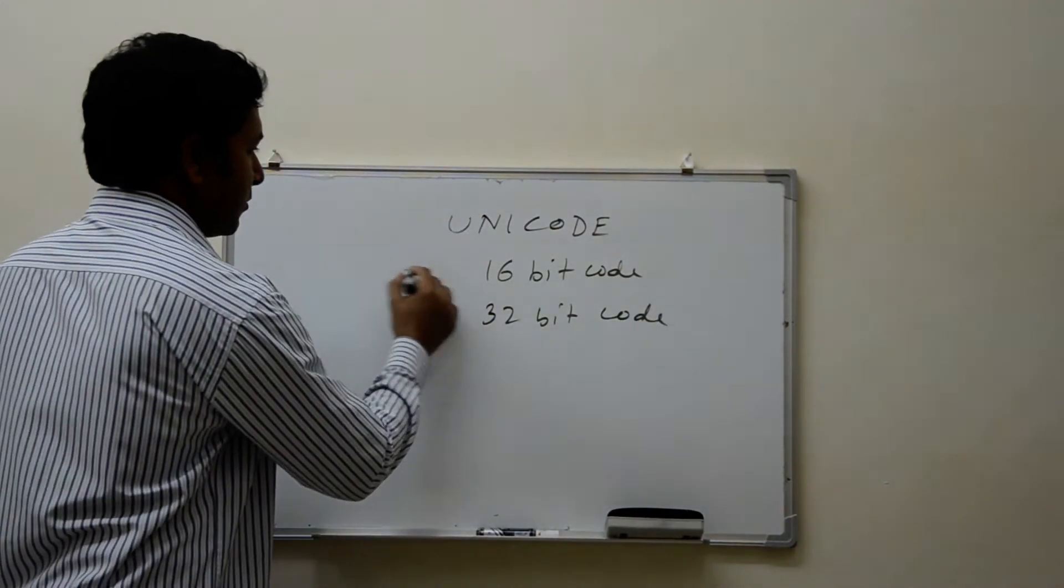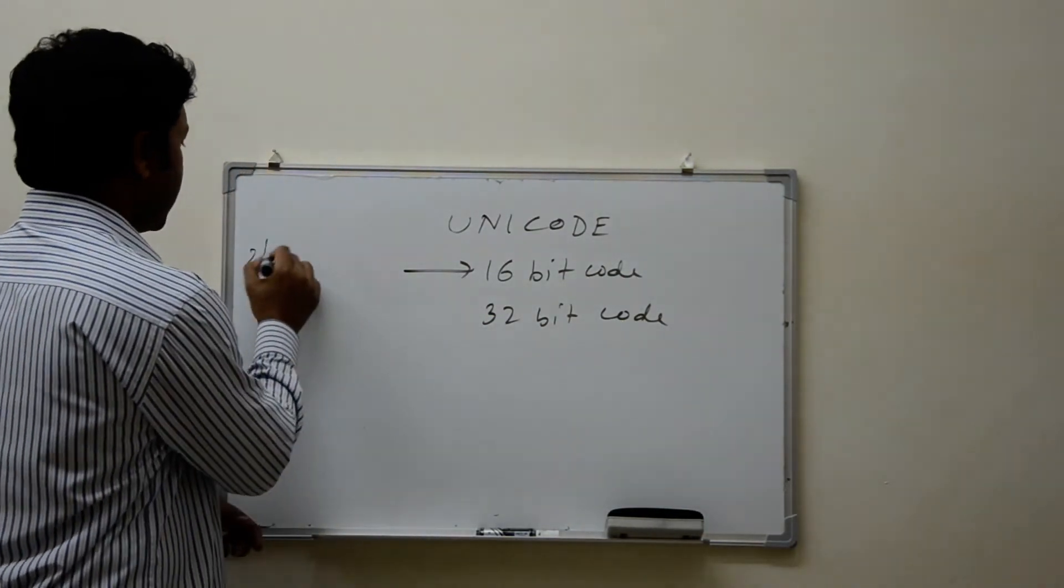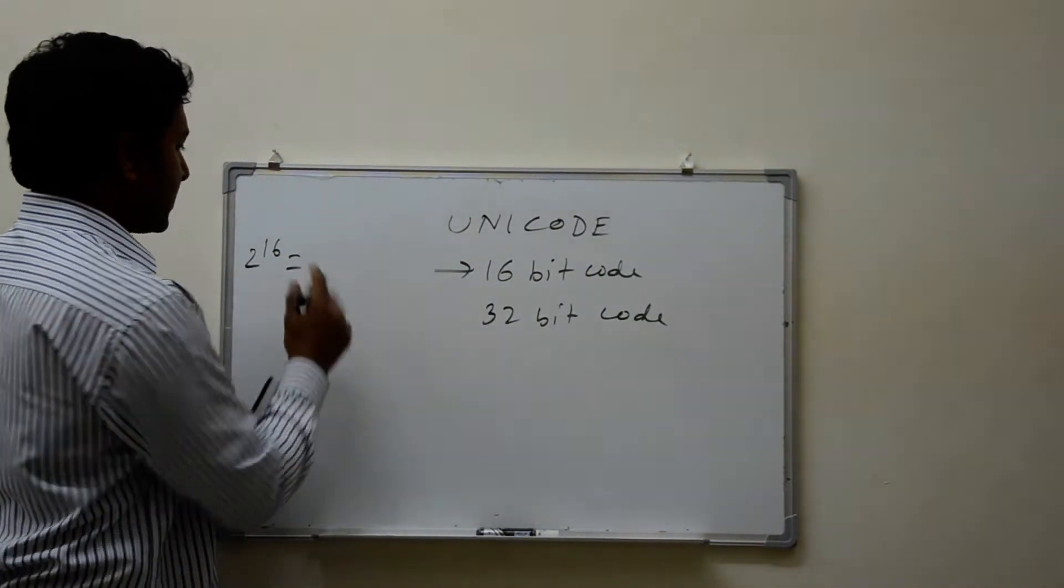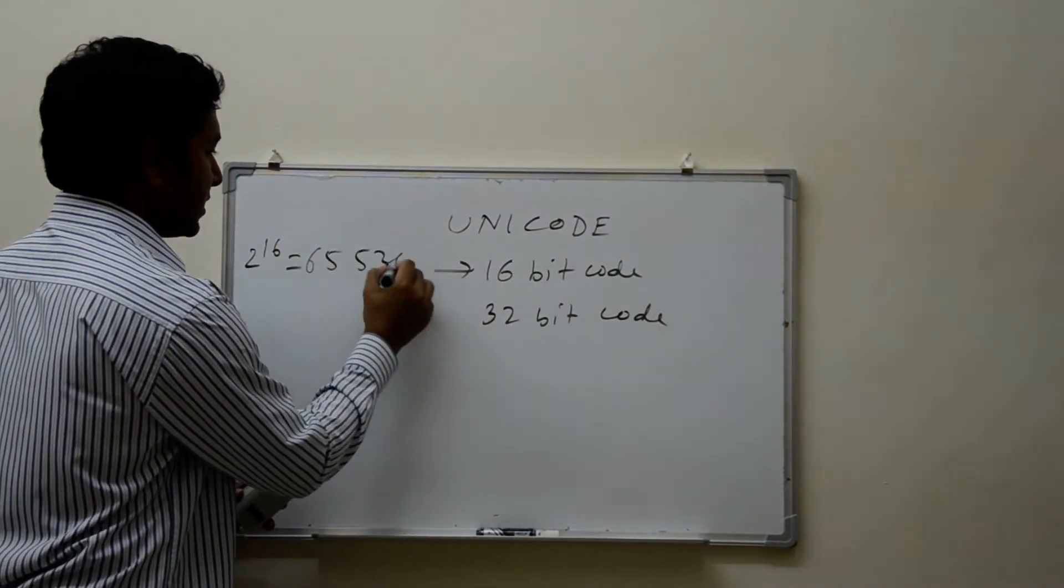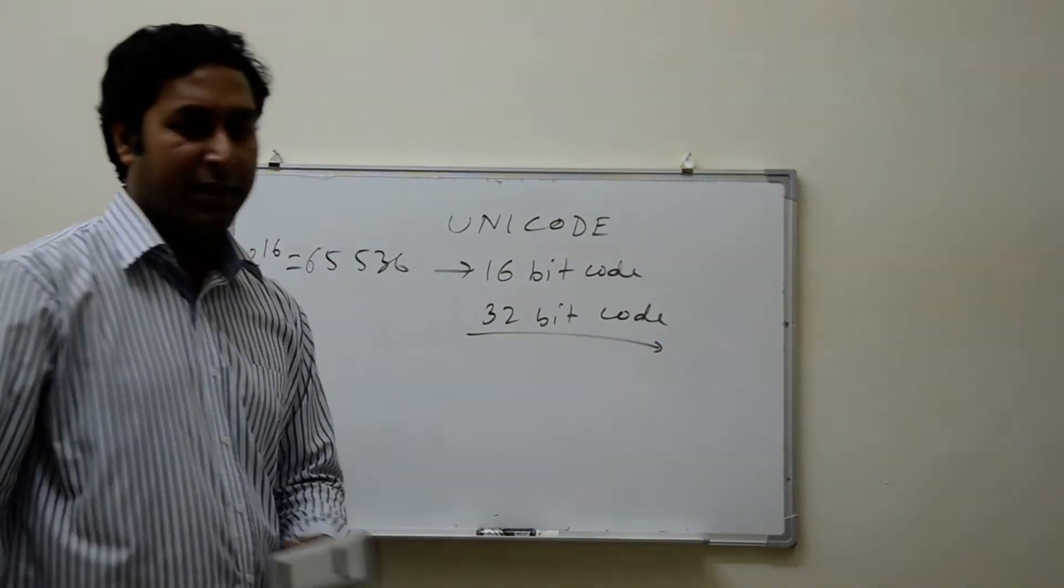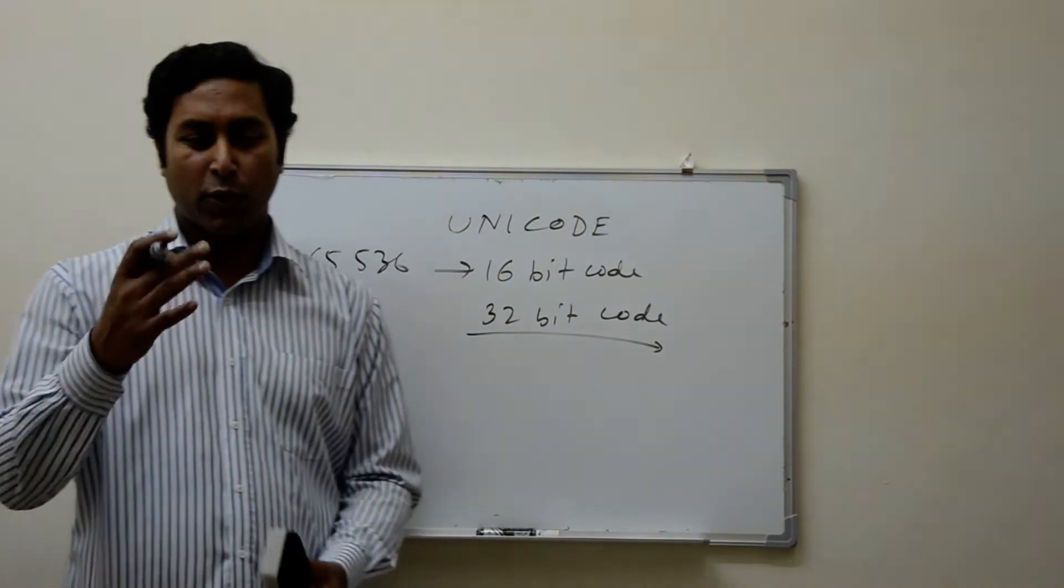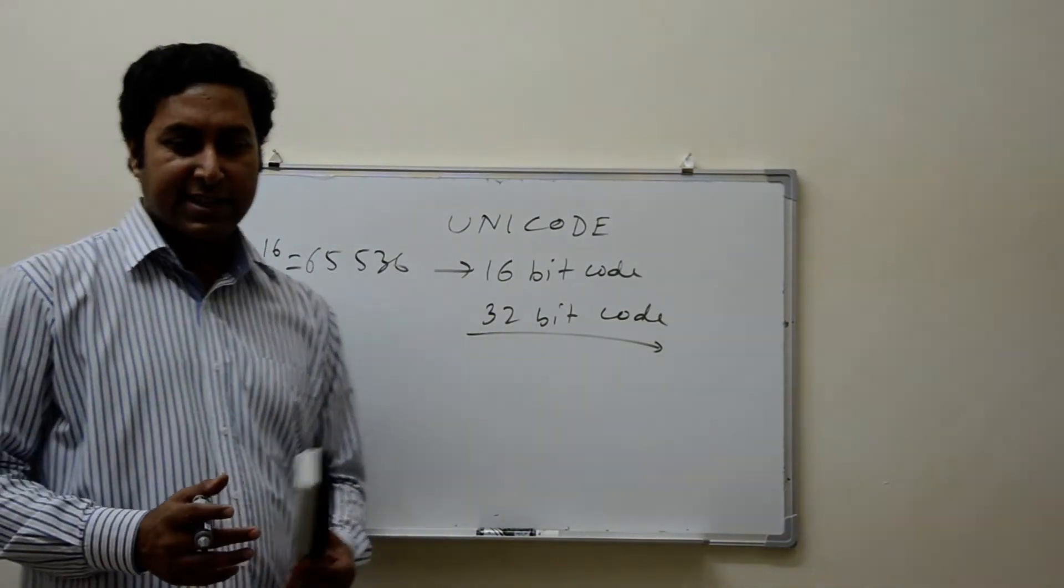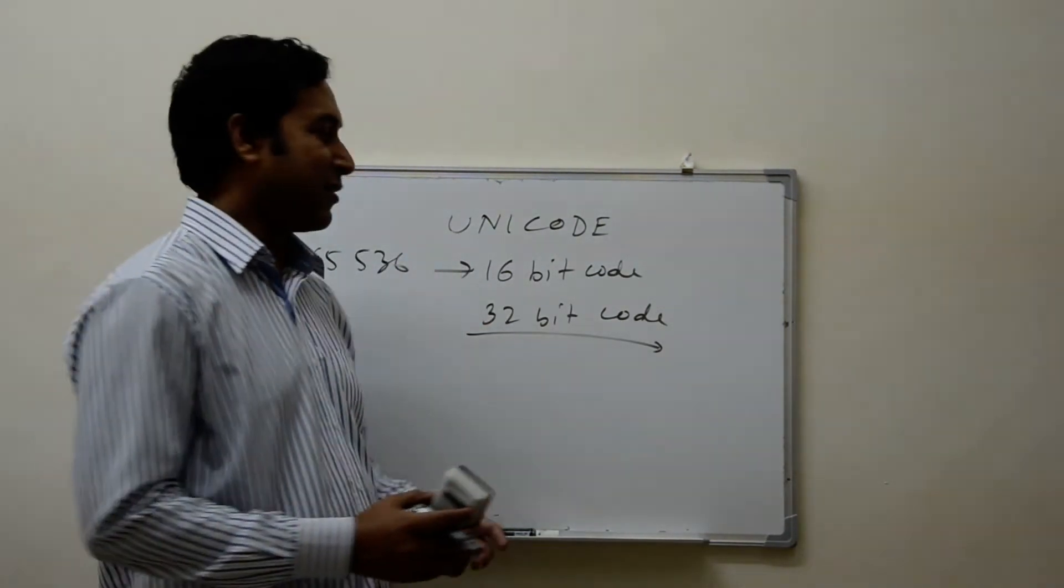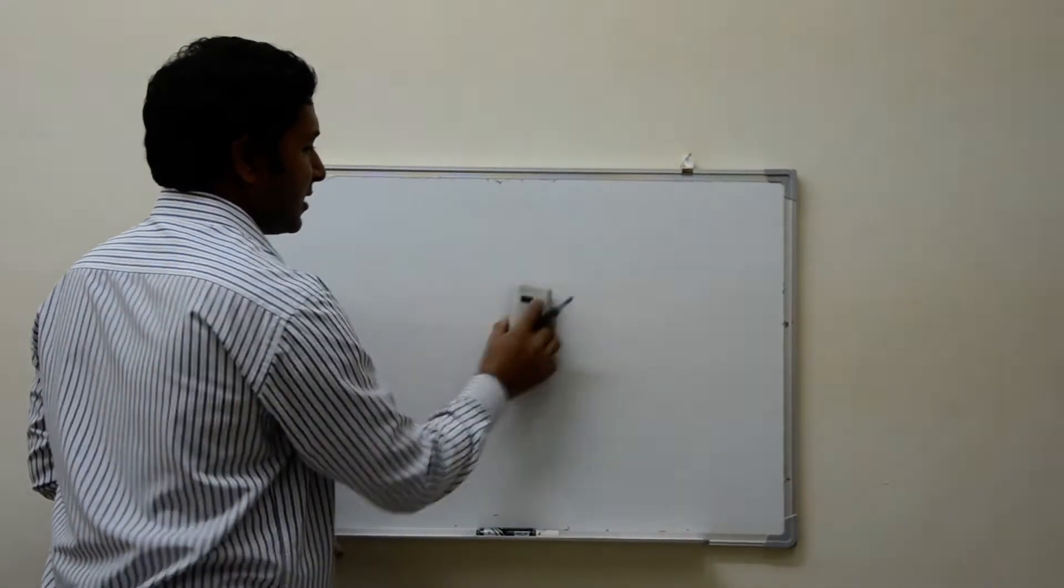If it is 16-bit, how many characters can be accommodated? It's 2 to the power 16, which is actually equal to 65,536 characters. If it is 32-bit, in that case it goes more. It goes up to 4,294,967,296 characters. That's really a huge one. So all those characters throughout the world can be covered with Unicode.